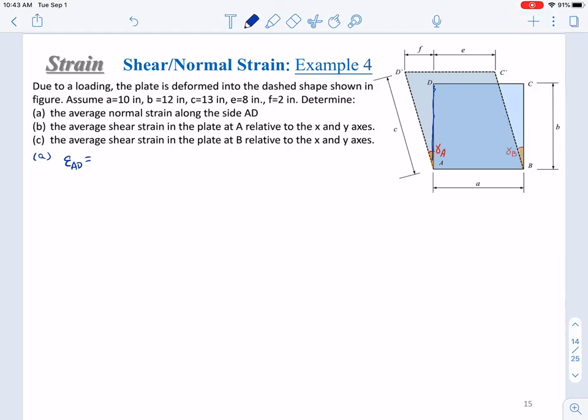We use the side after deformation minus the side before deformation. We get the length change. So this will be AD prime minus AD over AD. What is AD prime? AD prime as shown in the figure is C. What is AD? As shown in this figure, AD equals B, over B.